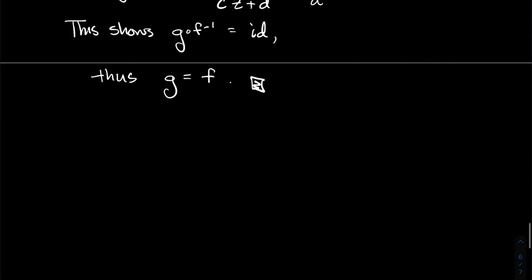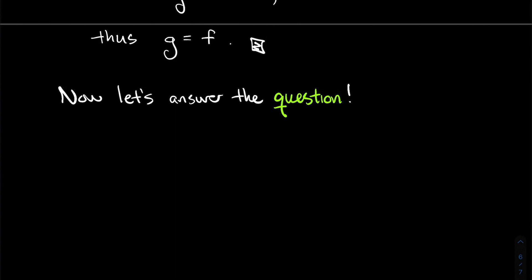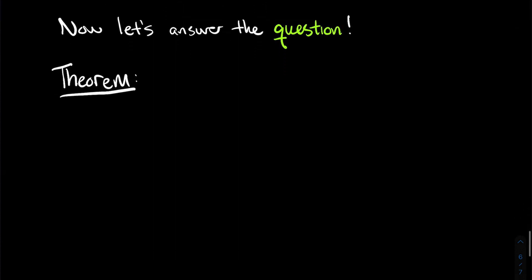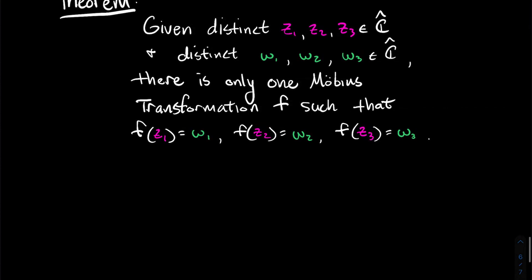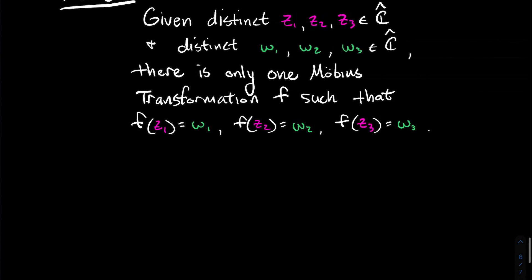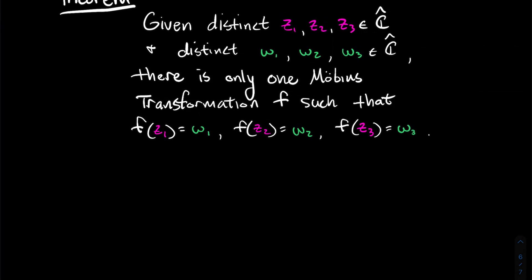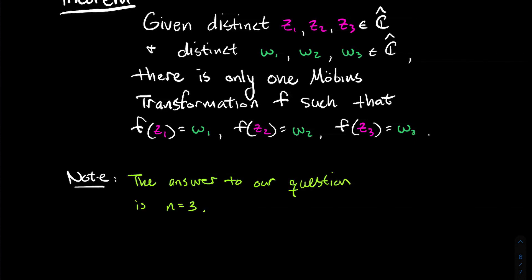That helps us answer our big question. Here's the main theorem: given three distinct extended complex numbers Z1, Z2, Z3, and another three distinct extended complex numbers W1, W2, W3 (the Z's and W's may overlap, but not within each list), there is only one Möbius transformation F such that F(Z1) = W1, F(Z2) = W2, and F(Z3) = W3. This tells us the answer: three extended complex numbers determine a unique Möbius transformation.